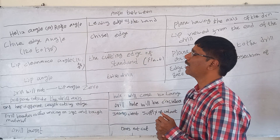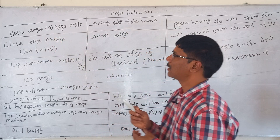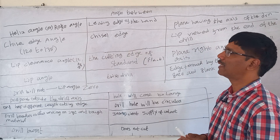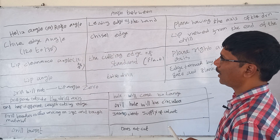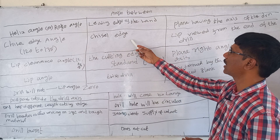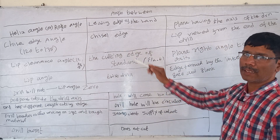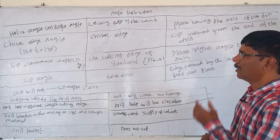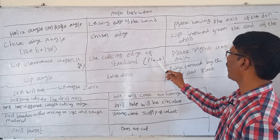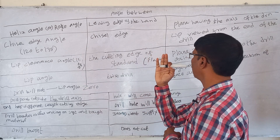The helix angle (also called elix angle) is equivalent to the rake angle in a single point cutting tool. It is the angle between the leading edge of the land and the plane containing the axis of the drill, and is normally 30 degrees. The chisel edge angle varies from 120 to 135 degrees; it is the angle between the chisel edge and the lip as viewed from the end of the drill. The lip clearance angle varies from 12 to 15 degrees; it is the angle between the flank and the plane at right angles to the drill axis.